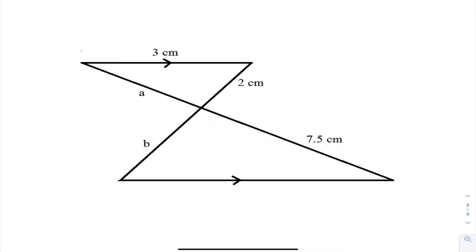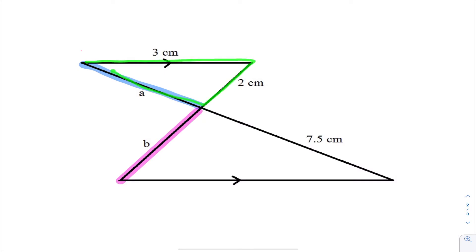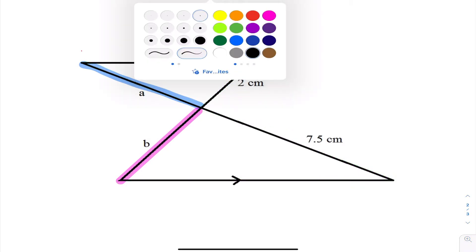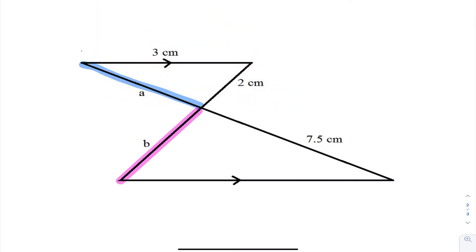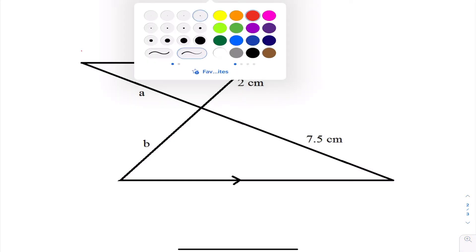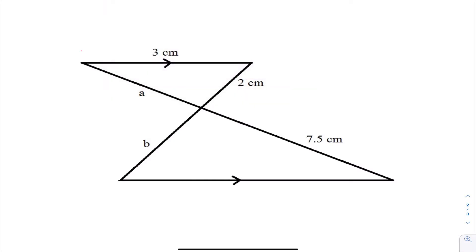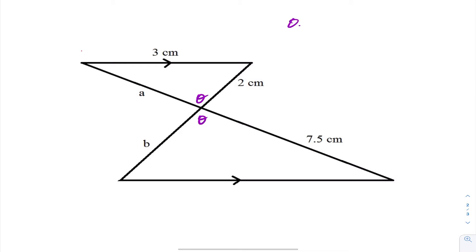For our first problem, they give us a diagram and want us to find the length of line segment A and line segment B. To apply similar triangles, we need to confirm the triangles are similar — specifically, is the smaller triangle similar to our larger triangle on the outside? To prove similarity, you either prove the ratio of the corresponding sides are the same or the angles are the same. Since we don't have all lengths, we'll use the angles. We know these two angles are equal by the opposite angle theorem.